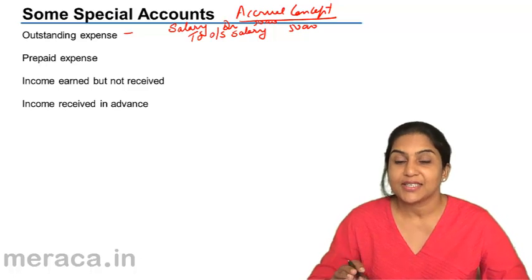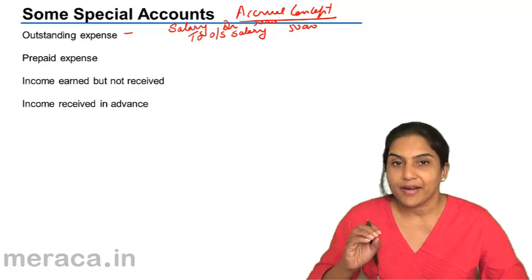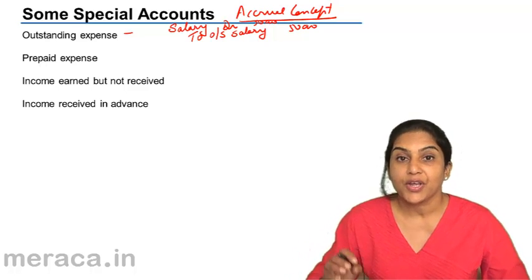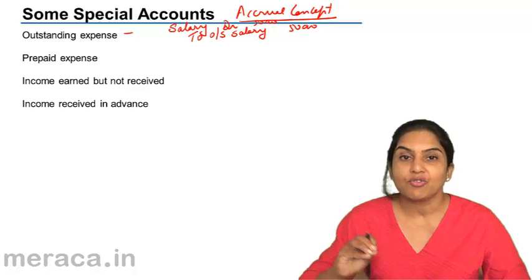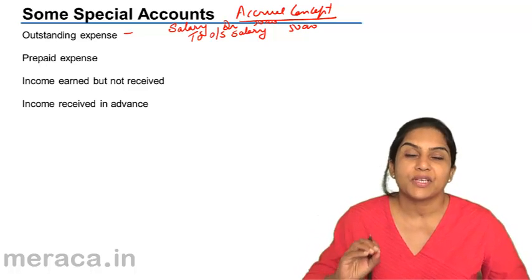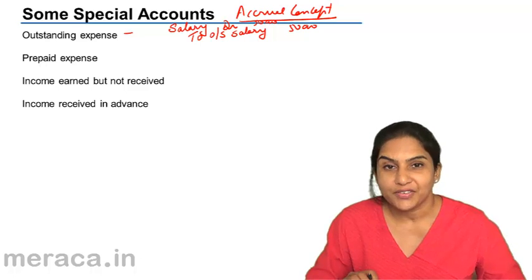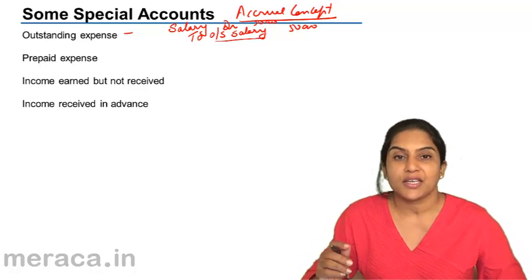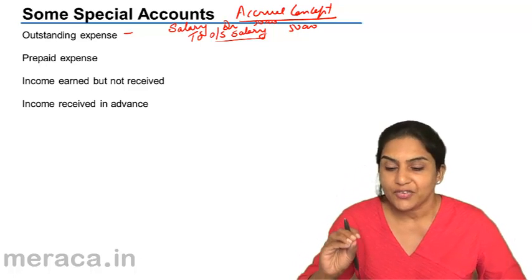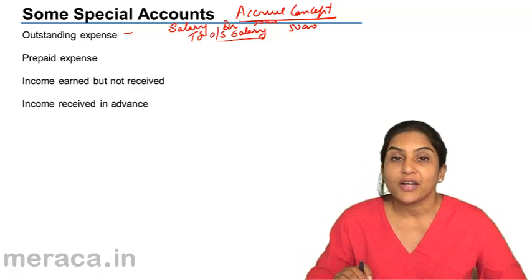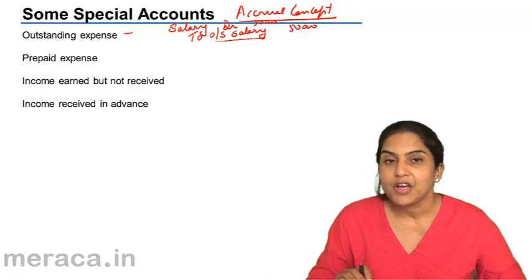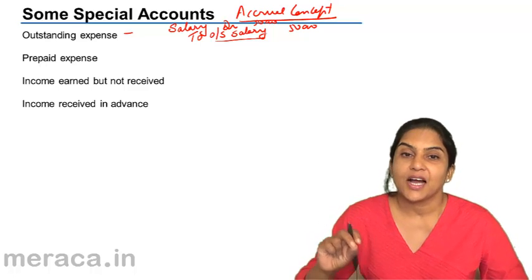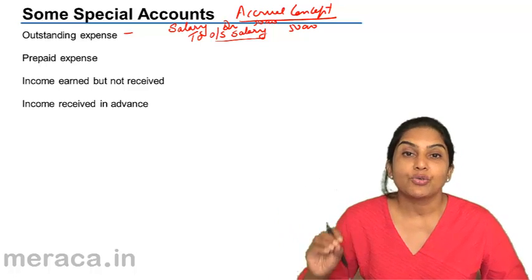Outstanding expense is a liability account. If we talk of outstanding salary account, it represents the accounts of the employees to whom salary is payable. Following the traditional approach, this outstanding account — whether it's outstanding salary, outstanding rent, or any outstanding expense — is called a representative personal account. Outstanding salary account represents the account of the employees to whom salary is due.